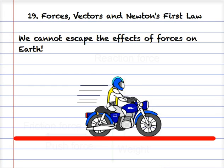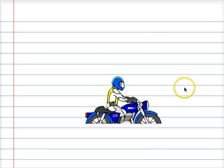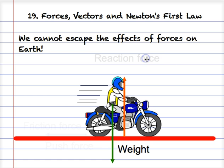In this 19th podcast we continue our look at forces but we look at vectors in more detail and Newton's first law. On earth we can't escape the effect of forces, and this motorbike example can show us some of those things. Firstly we have weight — the force of gravity pulling us down onto the earth. As a result of that force, the ground pushes back on us as well with an equal and opposite force, and we call that the reaction force.